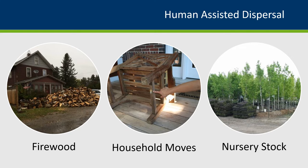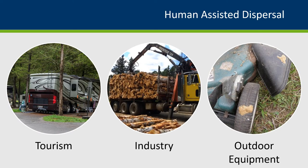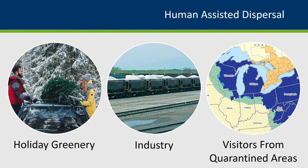Other ways that the Gypsy Moth continues to spread is by humans. Firewood is a common way for pests to travel. Household moves — the image in the middle has an egg mass on the bottom of a chair. Nursery stock originating from quarantined areas could also be a possible way to spread Gypsy Moth. More ways humans aid in the movement of Gypsy Moth include heavy tourism, industry such as logging, and the movement of outdoor equipment. The example here shows a lawnmower with two egg masses on it. Further human-assisted dispersal ways include holiday greenery being moved, rail carts, and visitors from quarantined areas unknowingly bringing Gypsy Moth to areas without.